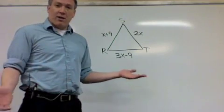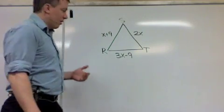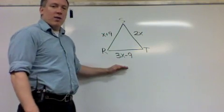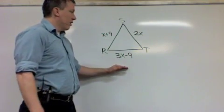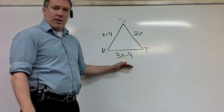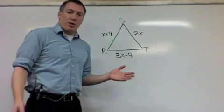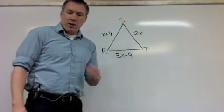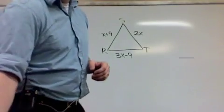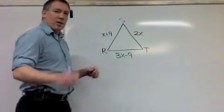And it's fairly simple. All the sides are equal, so everything has to equal each other. X plus nine needs to equal three X minus nine. Two X needs to equal three X minus nine. Two X must equal X plus nine. It's all equal. You don't need to use all of them, actually. You only need two. So let's pick the simplest ones. X plus nine and two X.